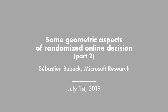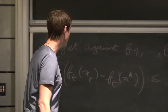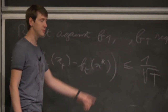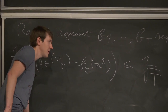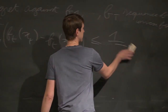Before the break I told you I would say something about lower bounds, but I changed my mind and prefer to keep going with upper bounds and algorithms to keep the flow going. You can do it as an exercise to show that the 1 over square root is optimal, and if you cannot do it you can come and ask me how to do it.